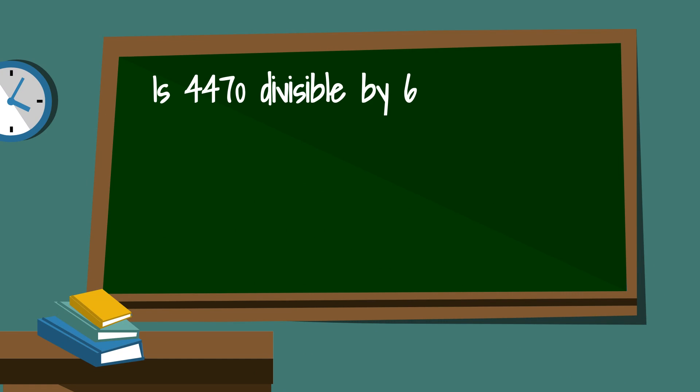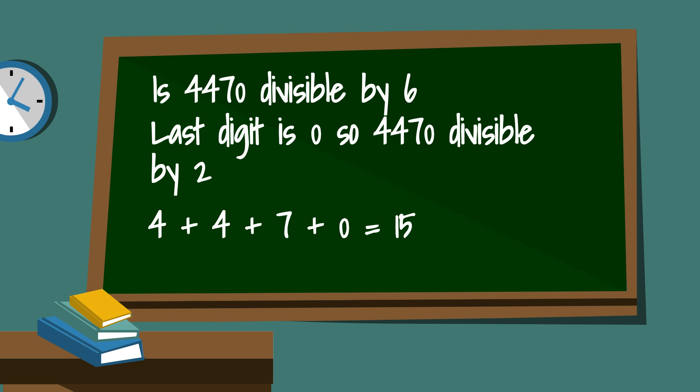Next we have 4470. It ends in a 0 so it is divisible by 2. Next if you add 4 plus 4 plus 7 that is 15. And 15 is divisible by 3. 3 times 5 is 15.